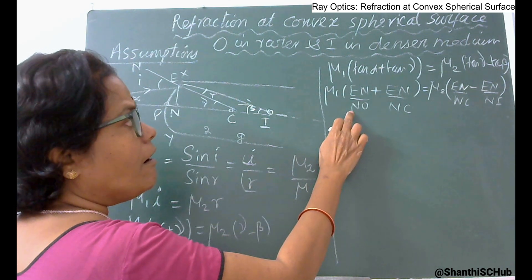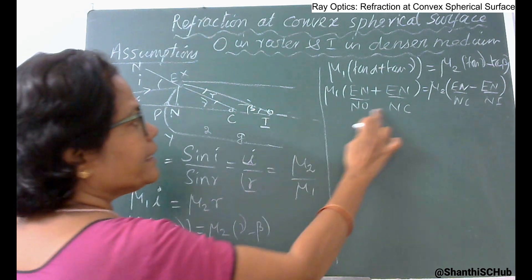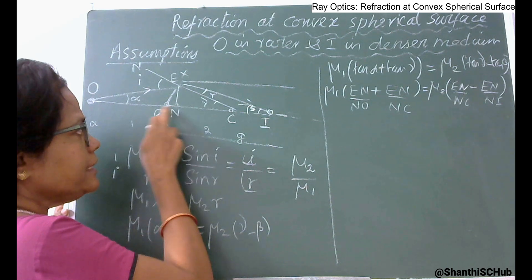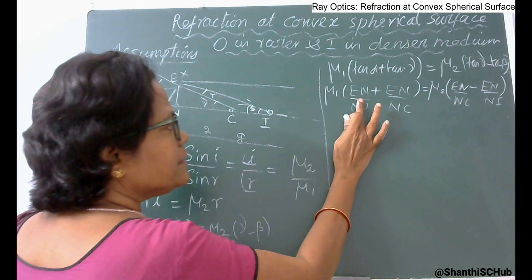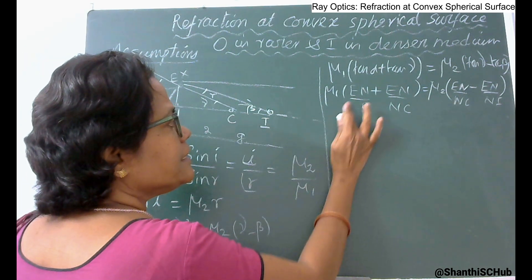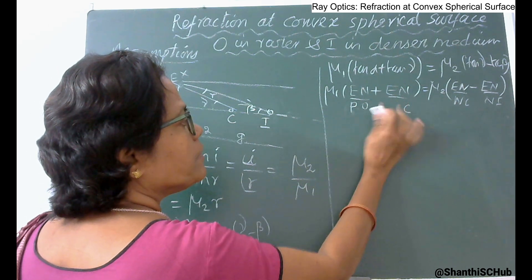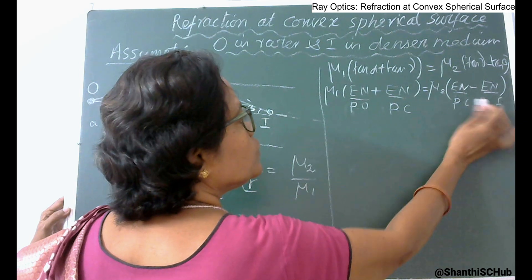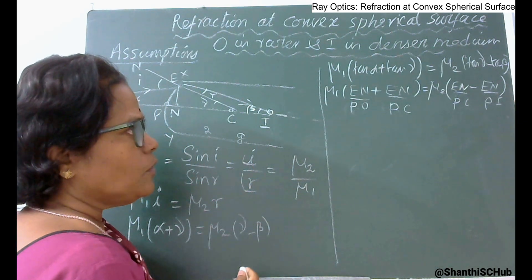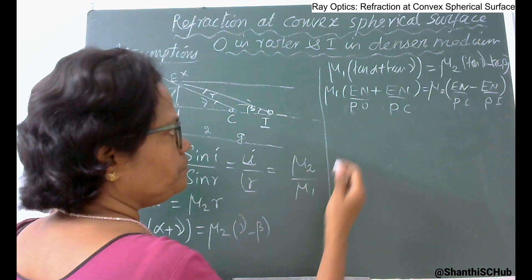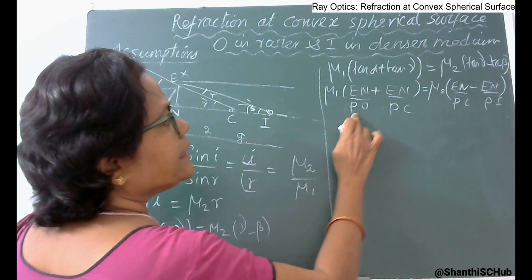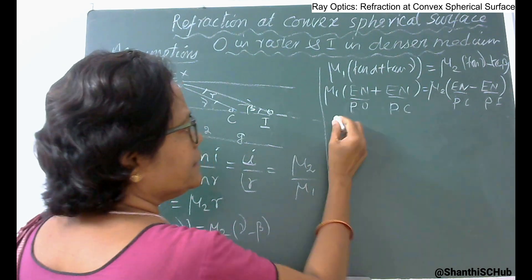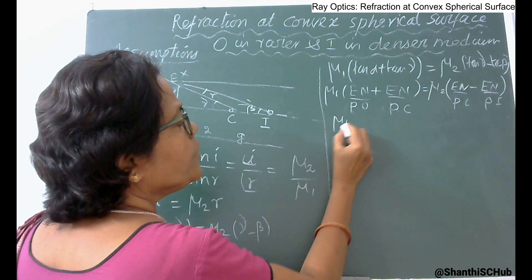All distances are from N, but since N is very close to P, we can replace N with P. So EN cancels from all terms on both left and right sides. We can then write: mu1/PO + mu2/PI on one side and the PC term rearranged accordingly, giving mu2/PI − mu1/PO = (mu2 − mu1)/PC.